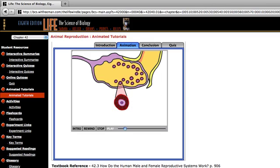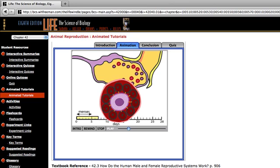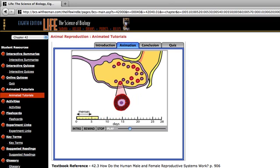An ovarian cycle lasts about 28 days, beginning at the first day of menstruation or menses. During the first seven days of the cycle, six to twelve primary oocytes begin to mature. As the follicles develop, the follicle cells communicate with oocytes and pass them nutrients through pores called gap junctions. Each oocyte grows larger and the surrounding follicle cells divide, proliferating to produce thousands of follicle cells in a single follicle.